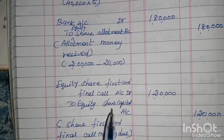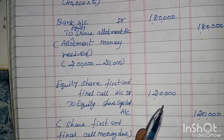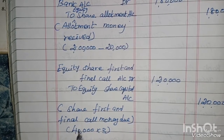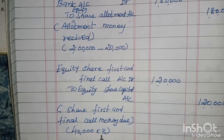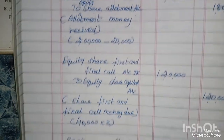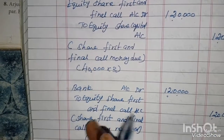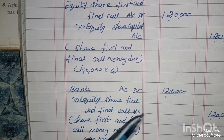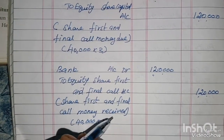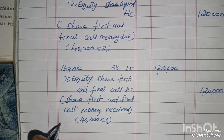Next entry: Equity share first and final call account debit to equity share capital account. First and final call money due: 40,000 shares into Rs.3 equals Rs.1,20,000. Debit and credit is Rs.1,20,000. Finally, bank account debit to equity share first and final call account: Rs.1,20,000 — first and final call money received, 40,000 into Rs.3 equals Rs.1,20,000.